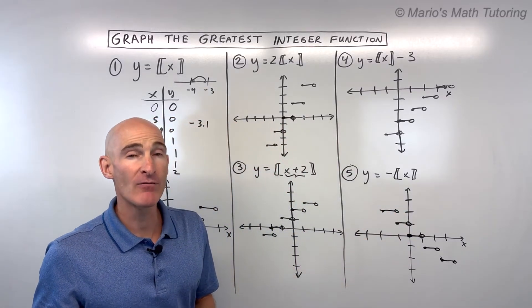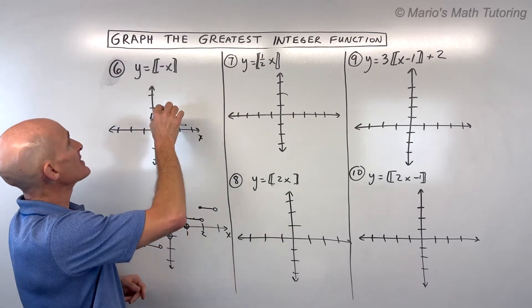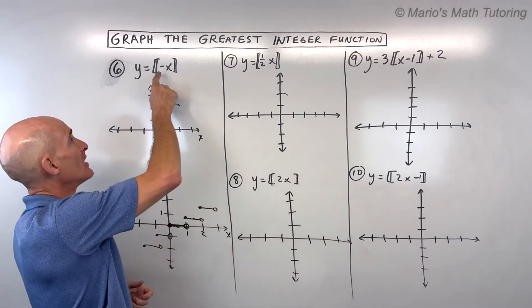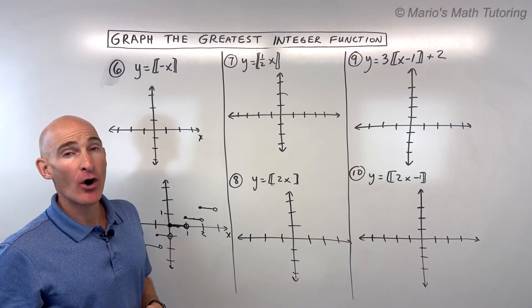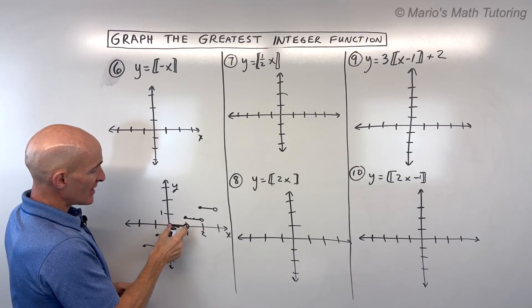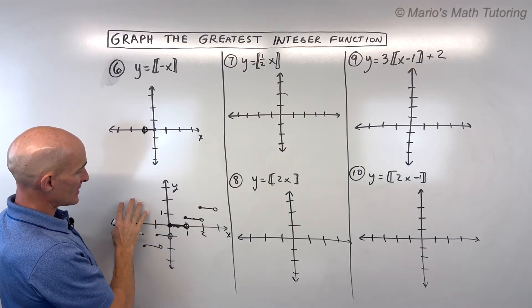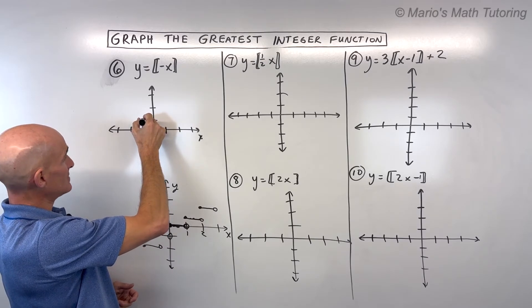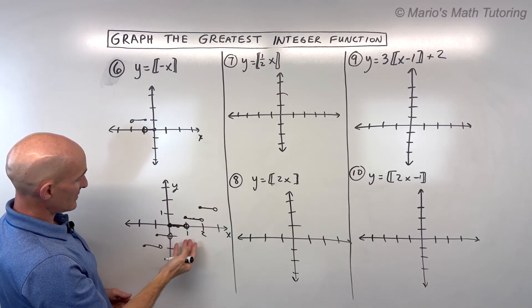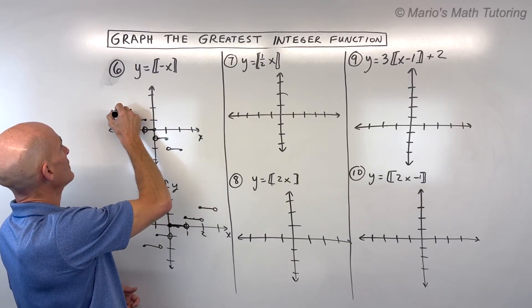For number 6, we've got y equals the greatest integer of negative x. Notice that negative is grouped with the x inside those double brackets. When it's grouped with the x, it makes all x values the opposite, which reflects the graph over the y-axis. So each stair reflects — the steps now go in the opposite horizontal direction. That's a reflection over the y-axis.